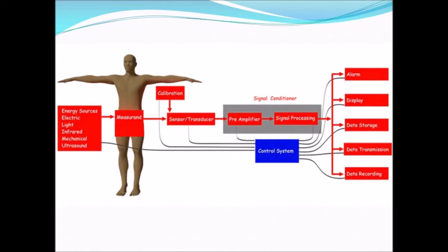This is the system — how it is connected and what are the components present in Biomedical Instrumentation. The subject will be the human, which we can also name as the measurand. To this measurand there should be some input signal, because without input we cannot get output. The inputs that can be given are energy sources: light, infrared, mechanical (that is vibration), and ultrasonic sound.